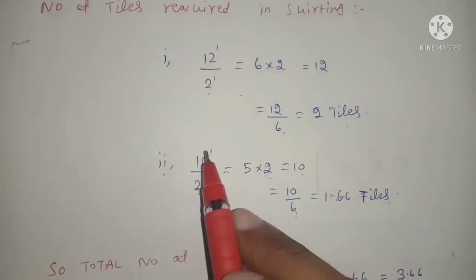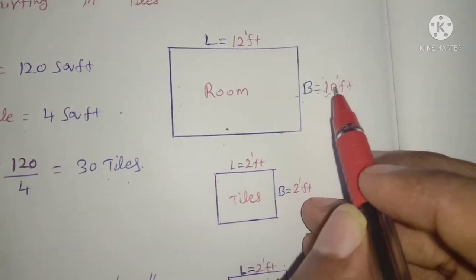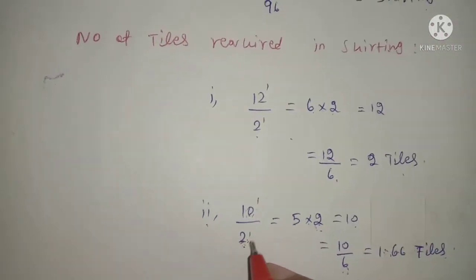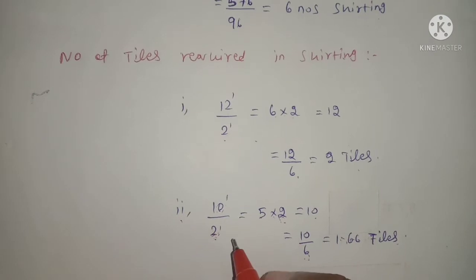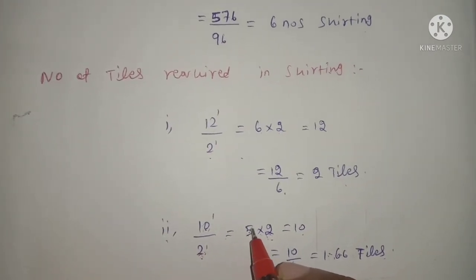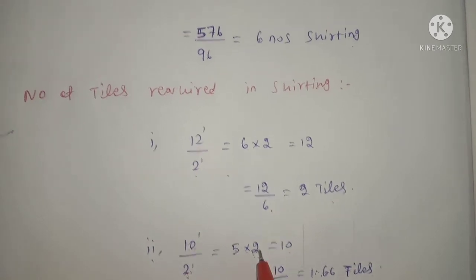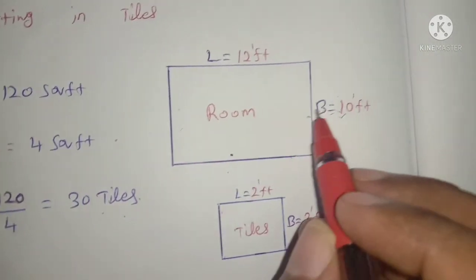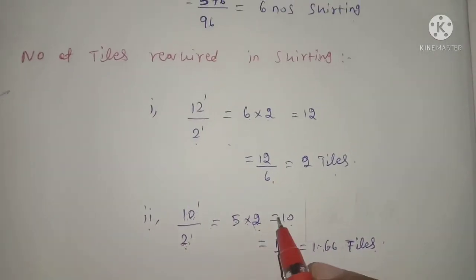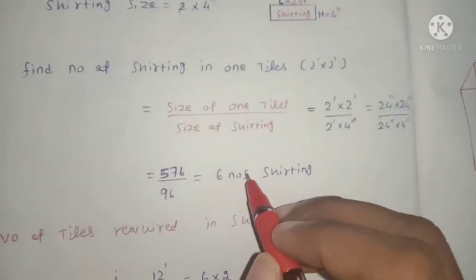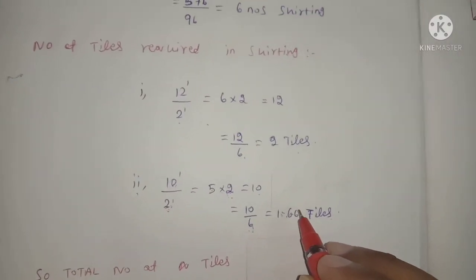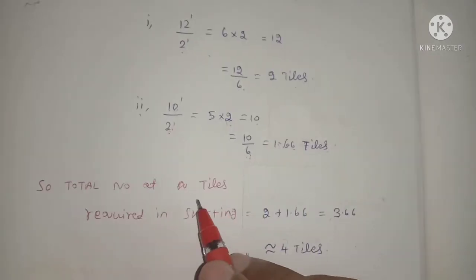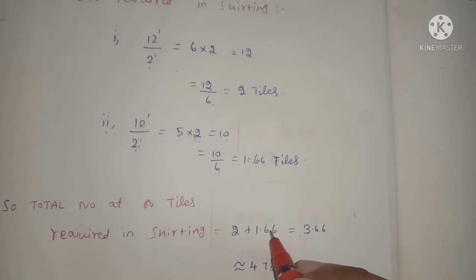For the room breadth of 10 feet: 10 feet divided by 2 feet equals 5. With 2 sides, 5 into 2 equals 10. Then 10 divided by 6 equals 1.66 tiles. So total skirting tiles required equals 2 plus 1.66, approximately 4 tiles.